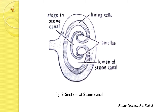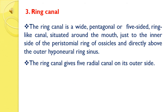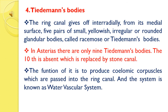This is the picture of sections of the stone canal. The ring canal is a wide pentagonal or five-sided ring-like canal situated around the mouth, just to the inner side of the peristomal ring of ossicles and directly above the outer hyponeural ring sinus. The ring canal gives five radial canals on its outer side. The ring canal also gives off interradially from its medial surface five pairs of small, yellowish, irregular or rounded glandular bodies called racemose or Tiedemann's bodies. In Asterias, there are only nine Tiedemann's bodies.